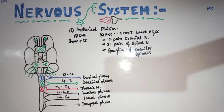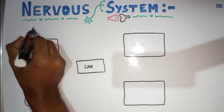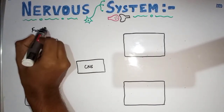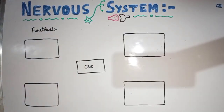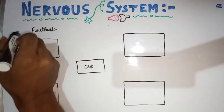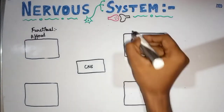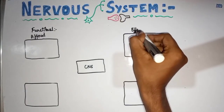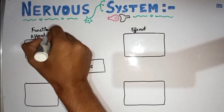The anatomical division of the nervous system is now complete. The functional classification of the nervous system divides it into afferent and efferent nervous systems. Afferent is the sensory system, and efferent is the motor system.